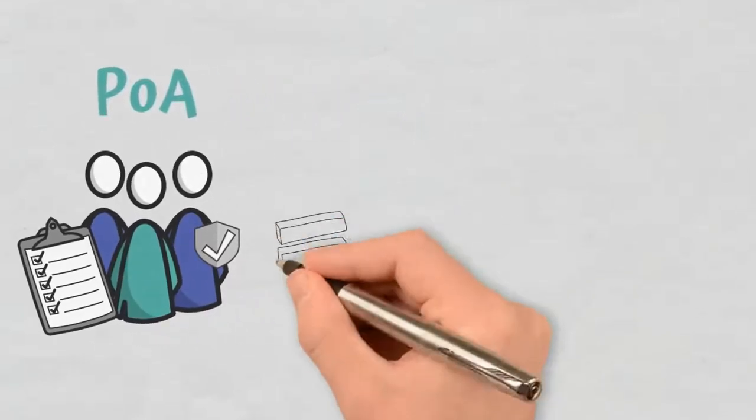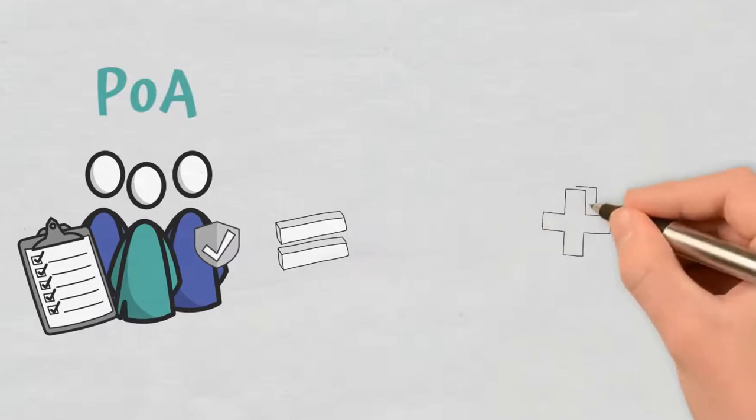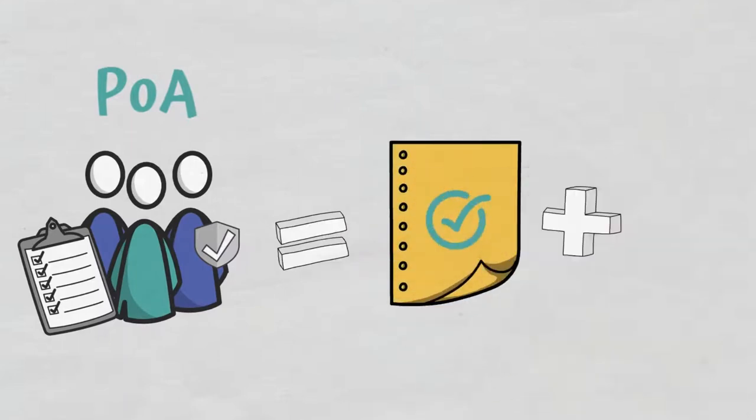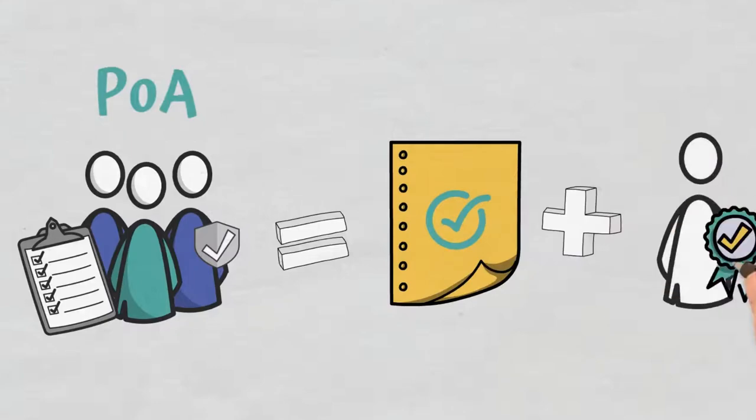Proof of Activity is actually a combination of two other blockchain consensus algorithms, Proof of Work and Proof of Stake.